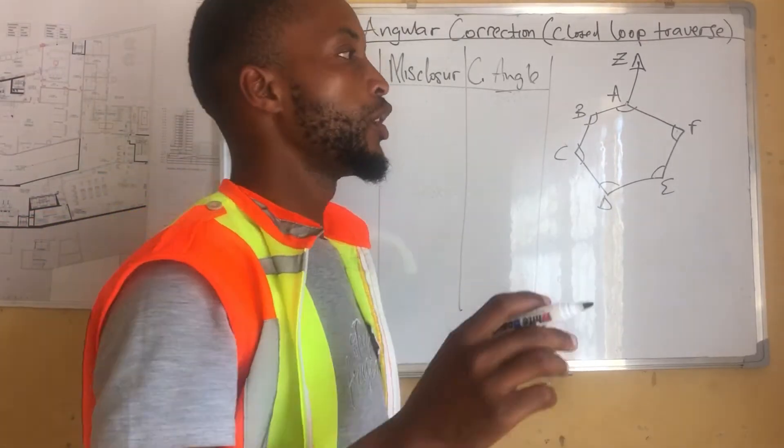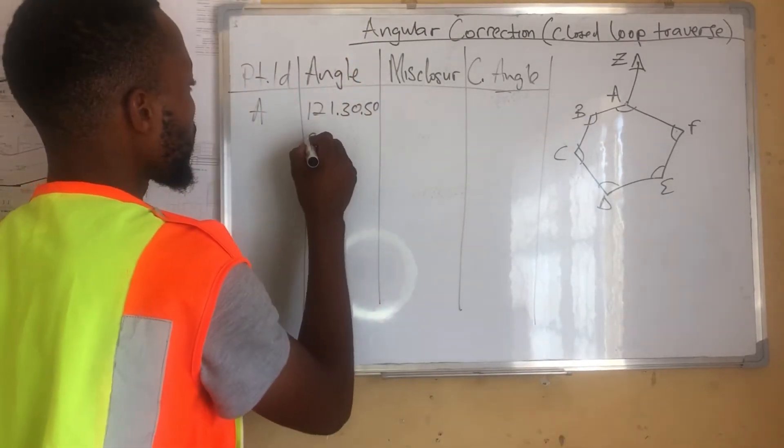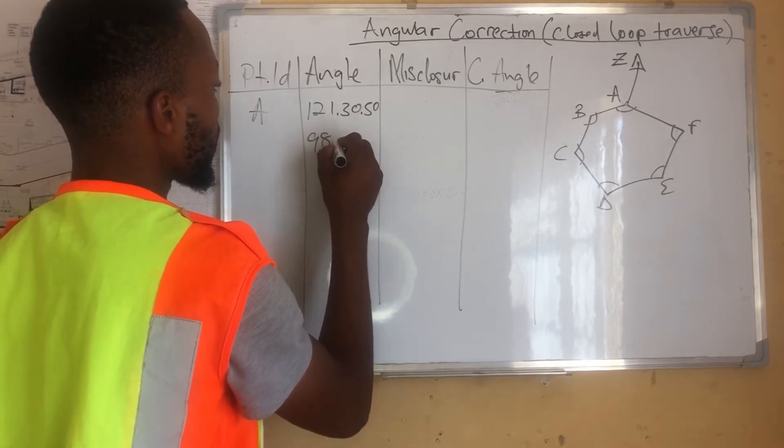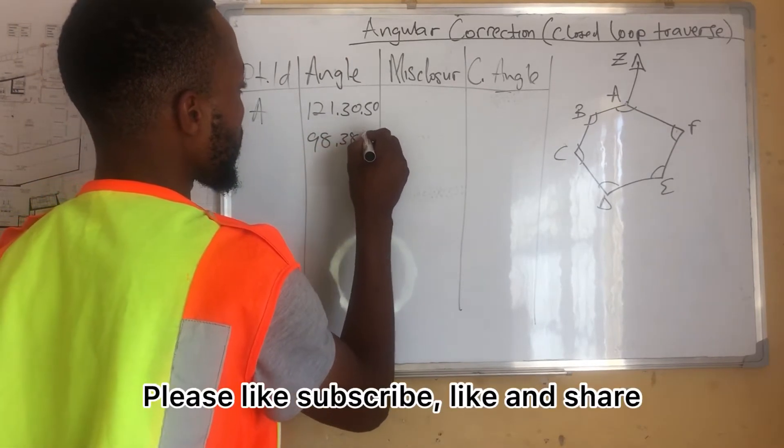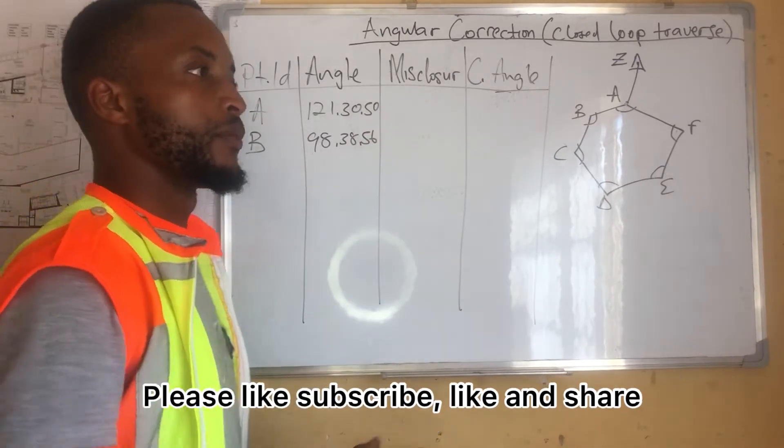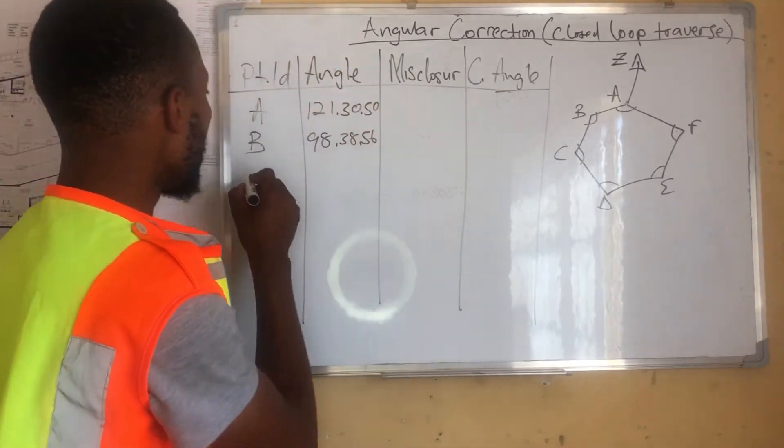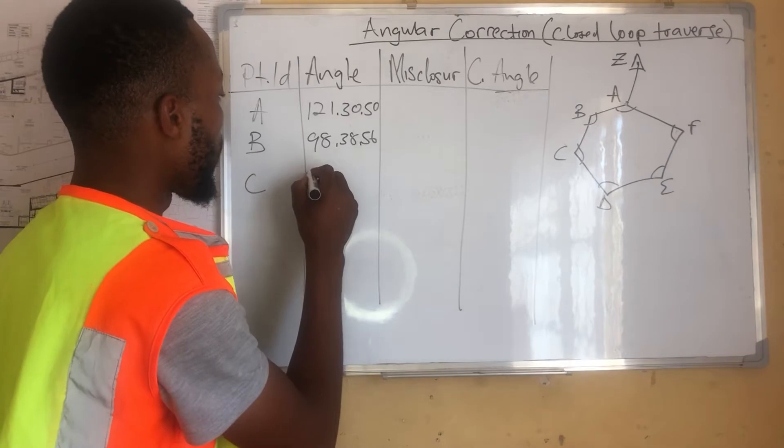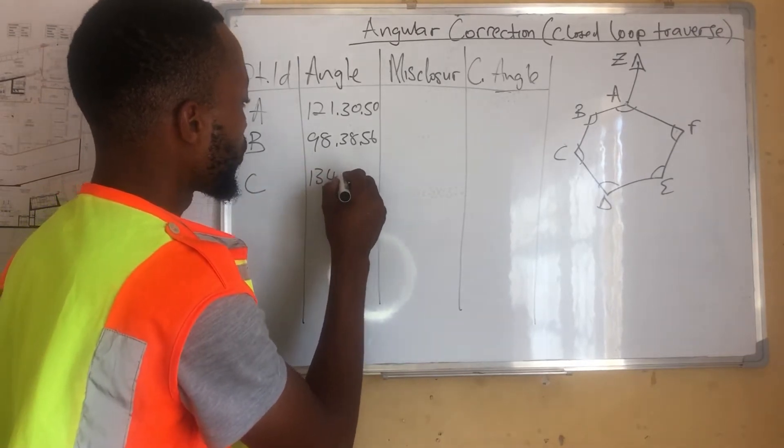Then for angle B, we have 98, 38, 56. This is our angle B.